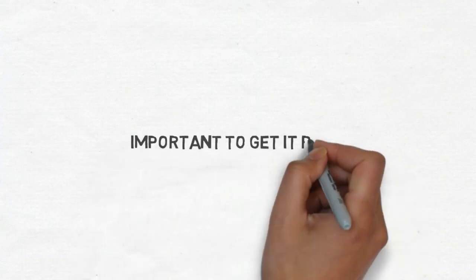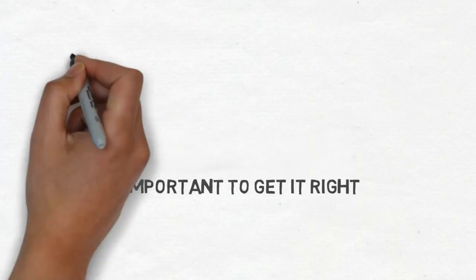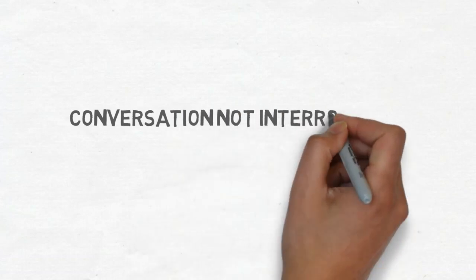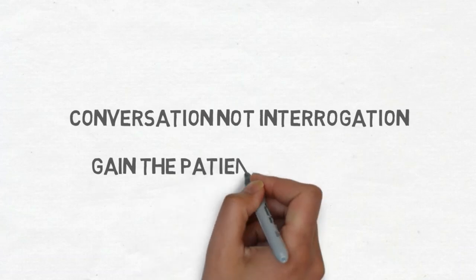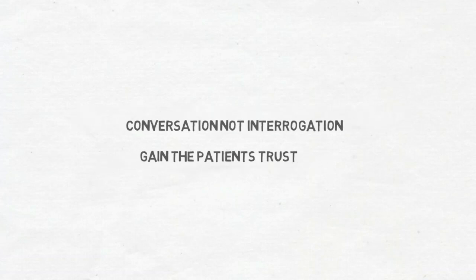Taking a history of a patient is really important because a lot of illnesses or conditions can be diagnosed through a good anamnesis or history of the patient. Obviously sometimes you can't, but the majority of the time you can get a basic understanding of what is wrong. Anamnesis should really be a conversation rather than an interrogation, because you want to build a rapport with the patient and make them feel comfortable so that they can trust you and tell you what is wrong honestly, rather than hiding key pieces of information.